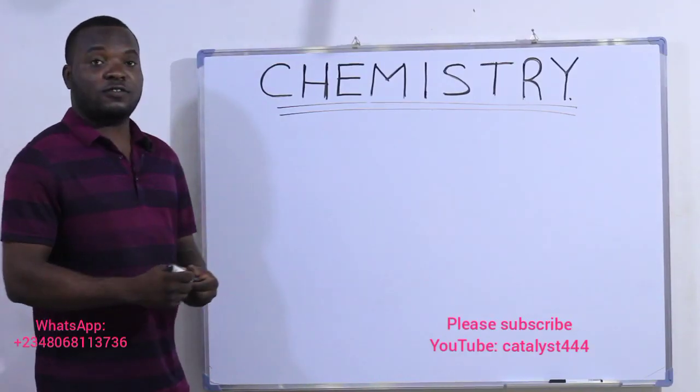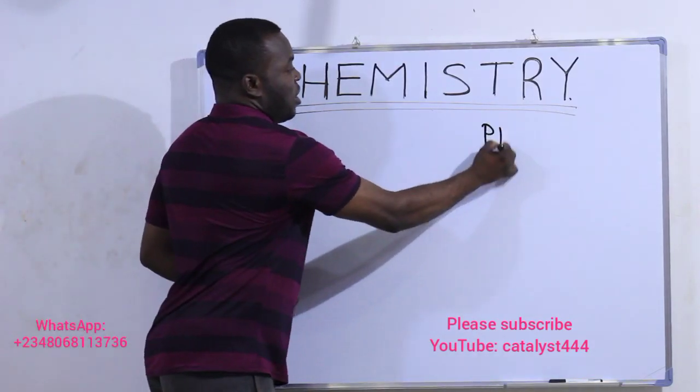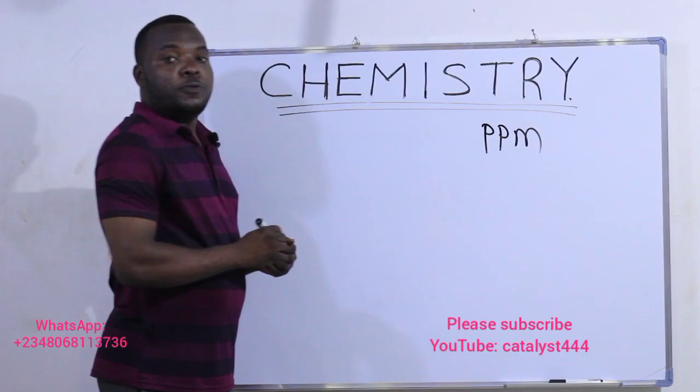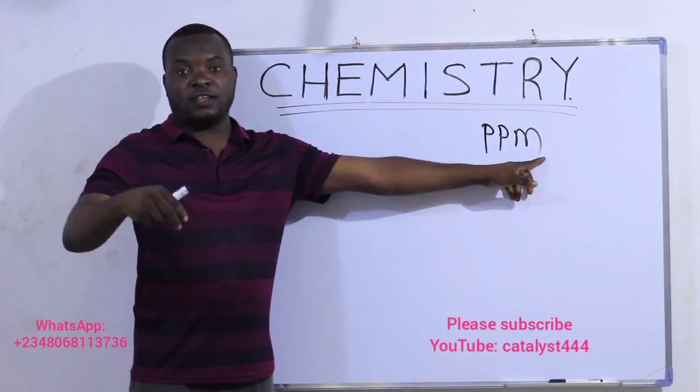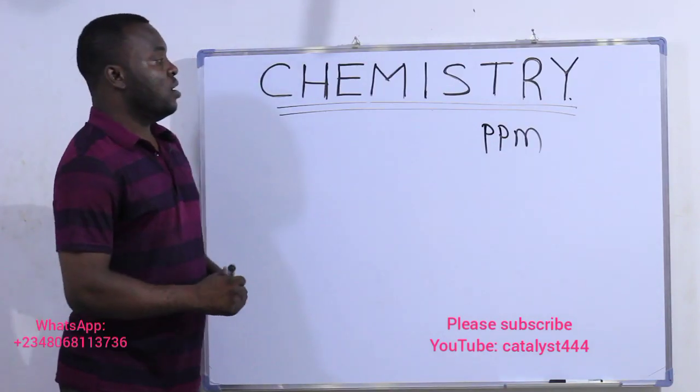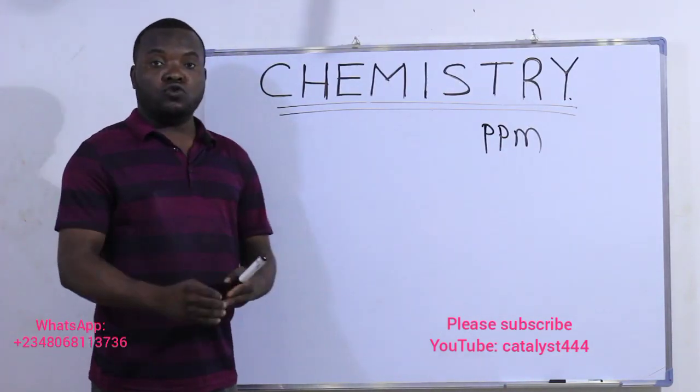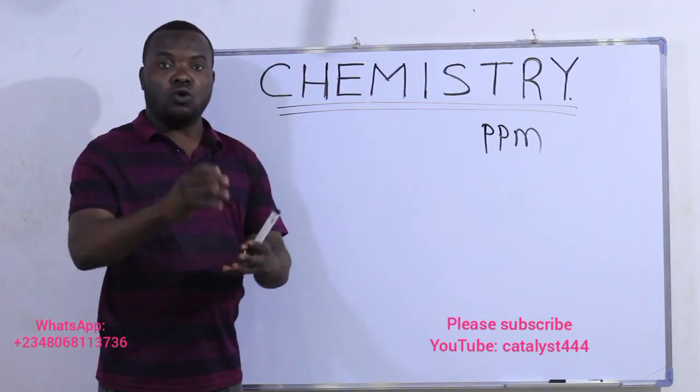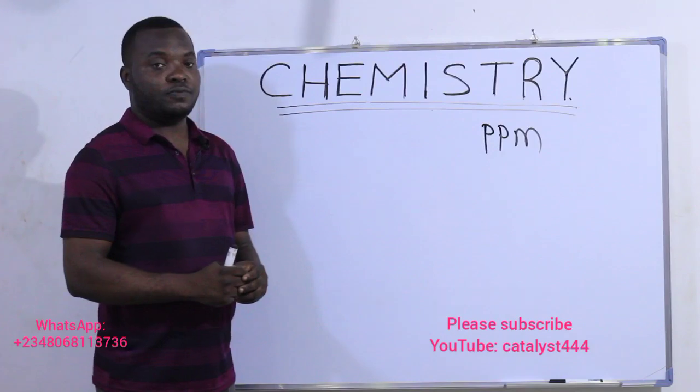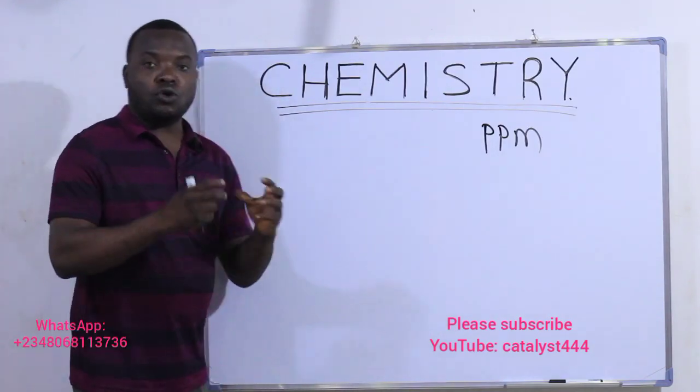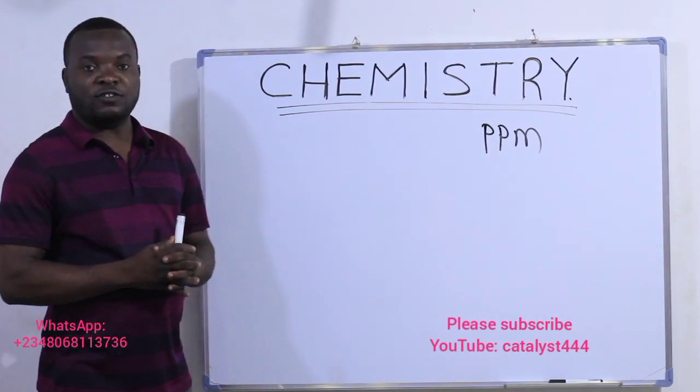We are going to look at PPM calculations. As we all know, PPM means Parts Per Million. PPM is one of the units of concentrations used to express very low concentration of substances in solution. How do we convert a certain concentration of a substance to PPM units?